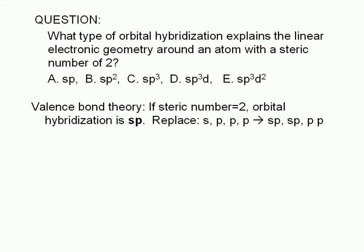Valence bond theory accounts for bonding between two atoms in terms of overlapping atomic orbitals. A steric number of 2 suggests that there are two regions of high electron density around an atom which are 180 degrees apart. This is explained by invoking the concept of orbital hybridization of the valence S orbital and one of the valence P orbitals.